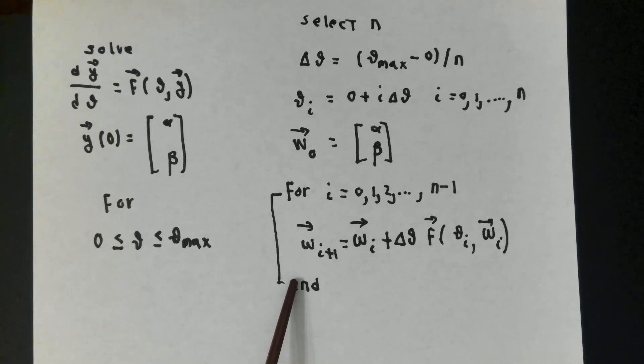And then for i equals 0, 1, 2, 3 to n minus 1, estimate w i plus 1. The estimate of the solution vector at theta i plus 1 will be the estimate at theta i plus delta theta times the f vector evaluated at theta i w i. Then we go around and do this again until we run out of indexes. We start with i equal 0. The very last i value is n minus 1. The very last w that we calculate will be w number n. This will be the approximation to the solution at theta n which is equal to theta max.